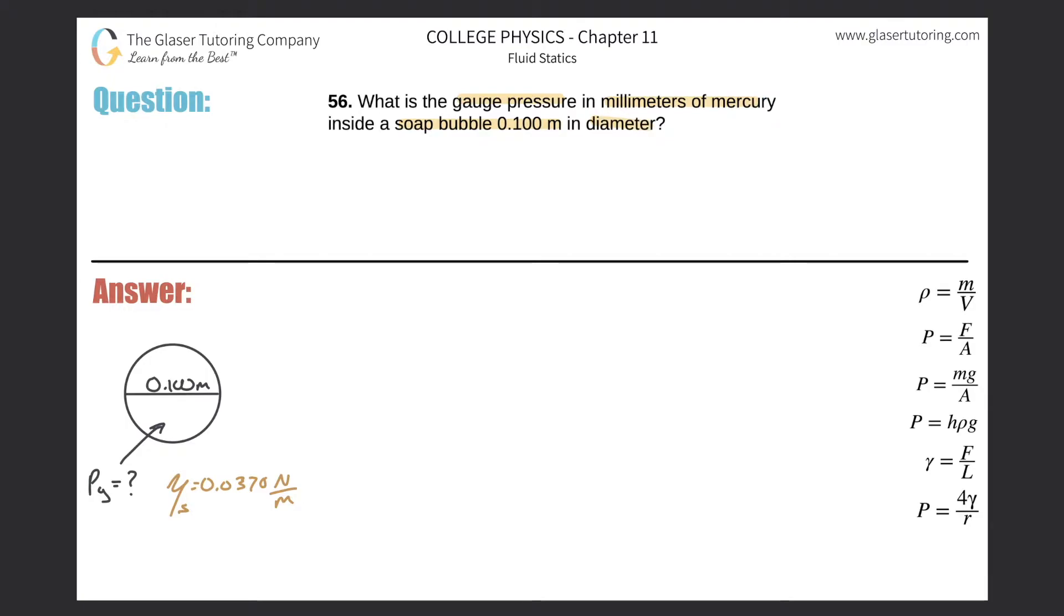So whenever they're asking for gauge pressure, they basically just mean what's the pressure inside of an object, the unbalanced force basically. When we calculate this, the formula down here on the right hand side is that of basically gauge pressure.